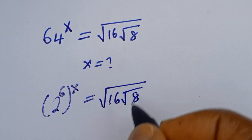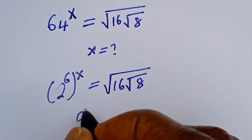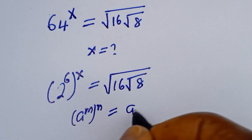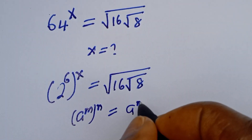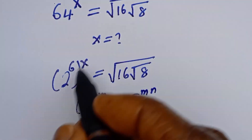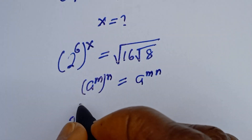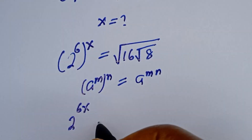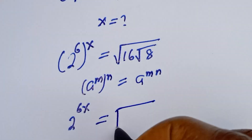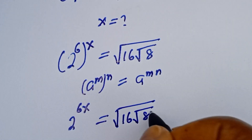Note that if you have a raised to power m, to the power of n, this is equal to a raised to power m times n. Applying this law, 2 to the power of 6s is equal to square root of 16 times square root of 8.